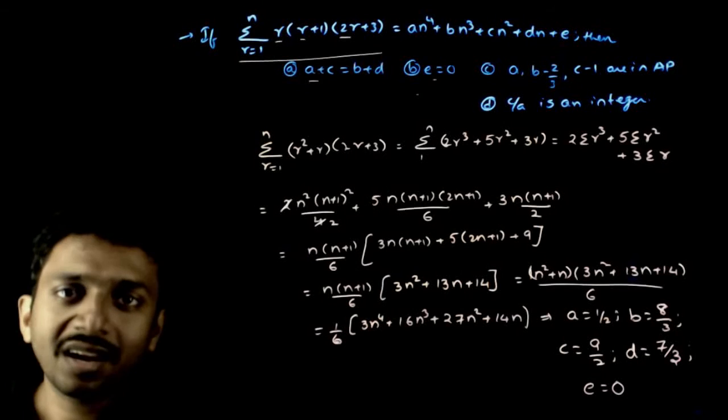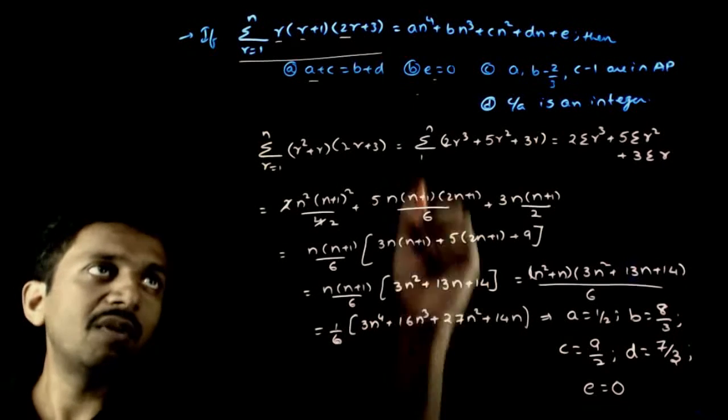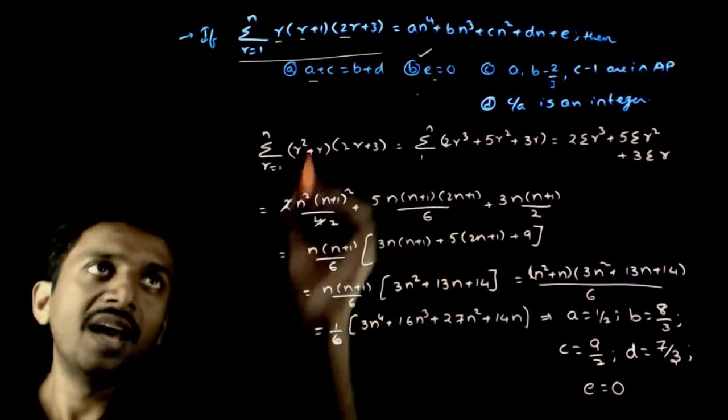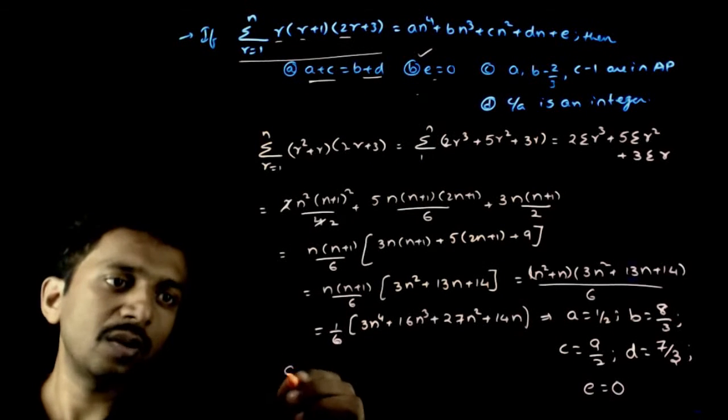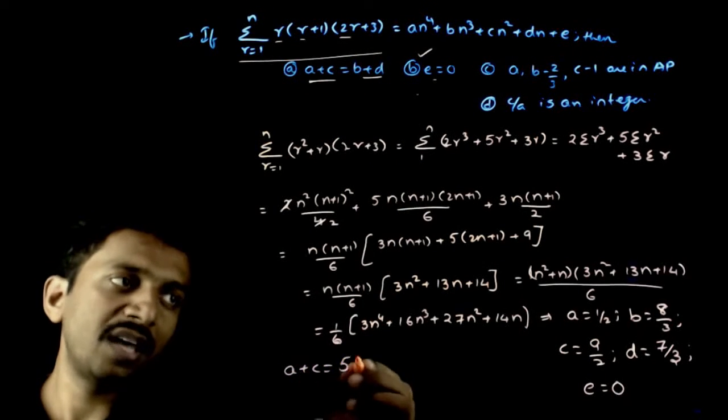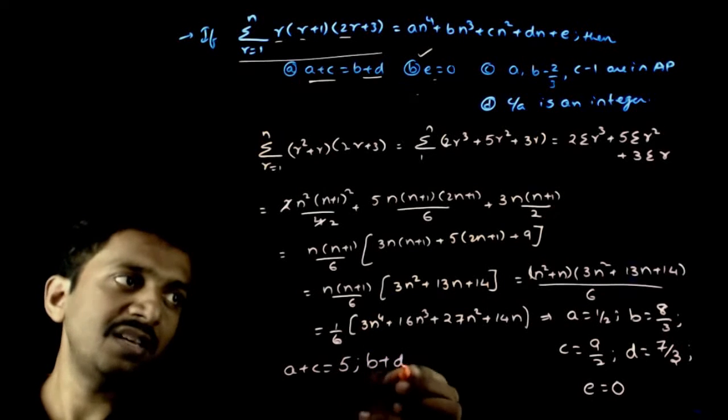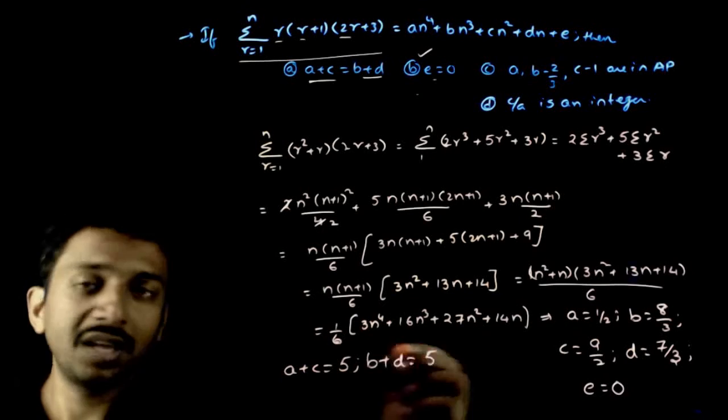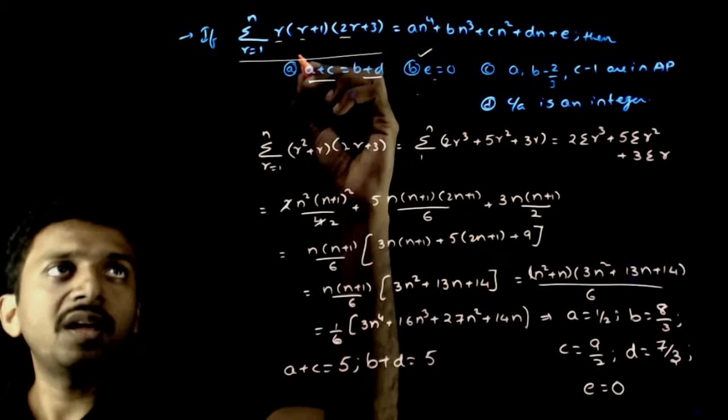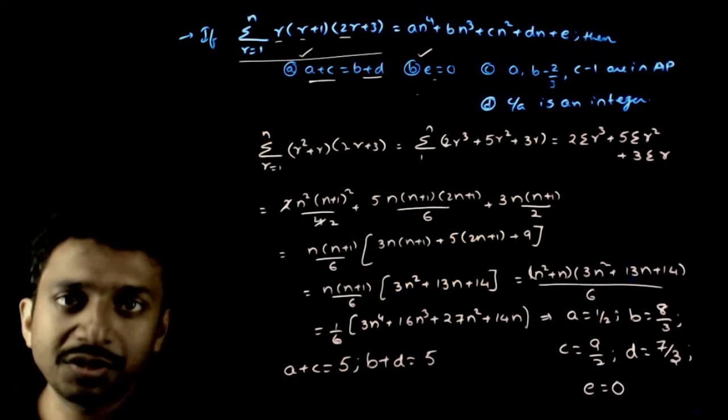Now let us see the options. e equal to 0, yes. Have a plus c, b plus d calculated. What is a plus c? a plus c equals 5. What is b plus d? b plus d equals 8 plus 7, 15 by 3 is also equal to 5. So a plus c equals b plus d is also true.